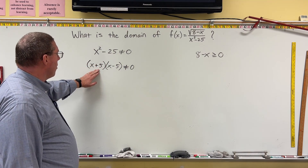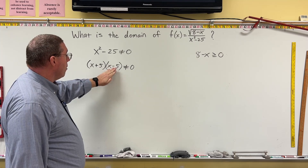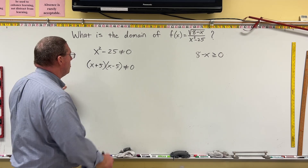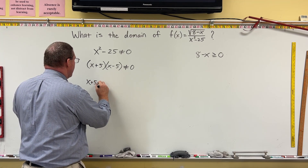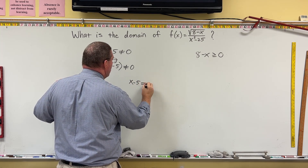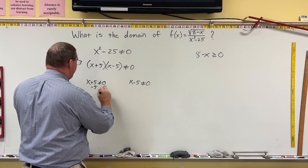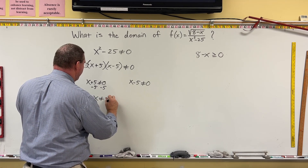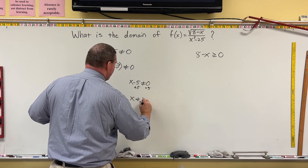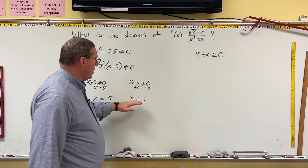Since neither factor can equal zero, x + 5 cannot equal zero and x − 5 cannot equal zero. Solving: subtracting 5 gives x cannot equal negative 5, and adding 5 gives x cannot equal positive 5. So x cannot equal negative 5, and x cannot equal positive 5.